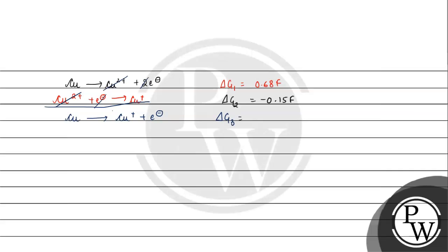ΔG₃ will be ΔG₁ plus ΔG₂, which is 0.68F minus 0.15F equals 0.53F.